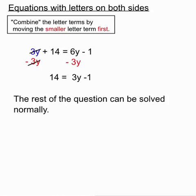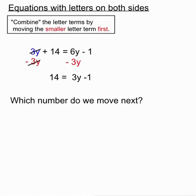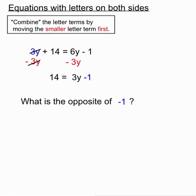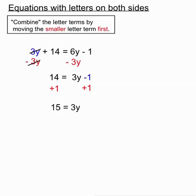The rest of the question can be solved normally like a two-step equation. Which number do we move next? We move the minus 1 next. How do we move a minus 1? We do the opposite, plus 1 both sides. On the left hand side we have 14 plus 1 which is 15. On the right hand side we have 3y and then a minus 1 and a plus 1 canceling each other out. So we're left with 15 equals 3y.